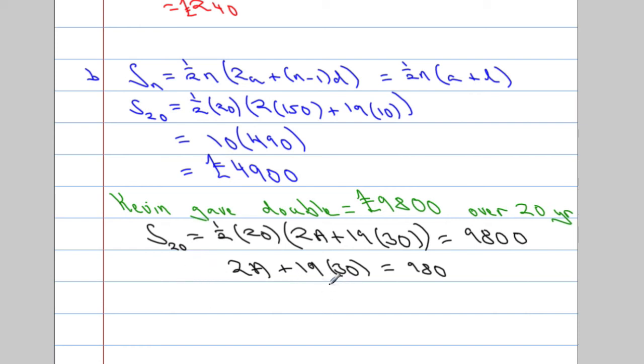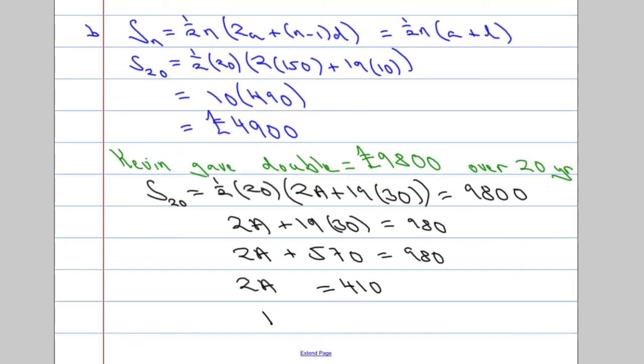So, 19 times 30. Well, what's 19 times 3? 19 times 3, 38, 57, I think. 9, 18, 27. Yeah, 57. So, 570. So, 2A plus 570 going to equal 980. Which means that 2A taking 570 away from both sides is going to be 410. Which means that the value we gave at first must be equal to 205 pounds.